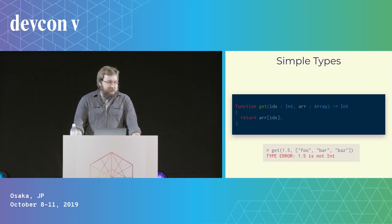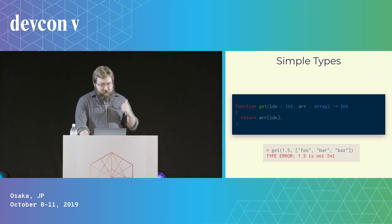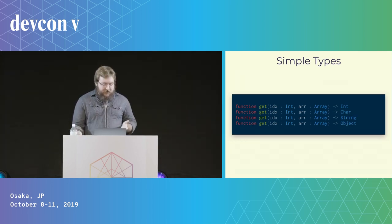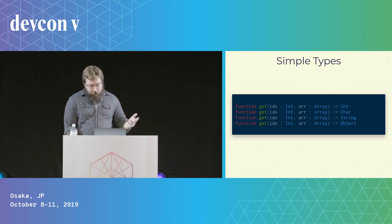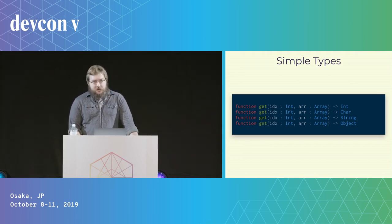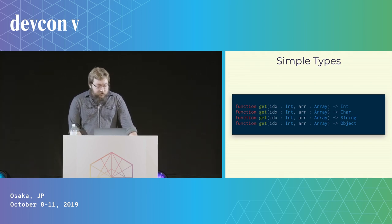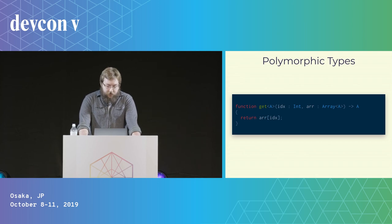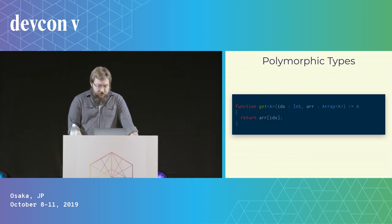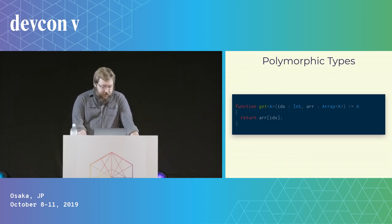But simple types are kind of inflexible. This function only works for arrays that contain integers. If we want different array contents in a simply typed language, we need to copy-paste lots of boilerplate. Lots of languages try to solve this with things like interfaces, but there's a better way. Polymorphism allows us to have a type parameter A that can get filled with int, string, or any type that we like.